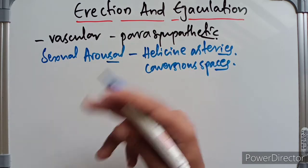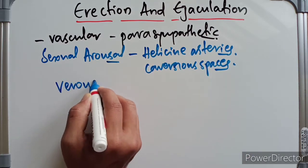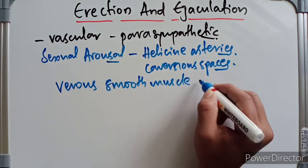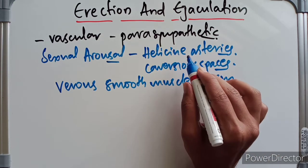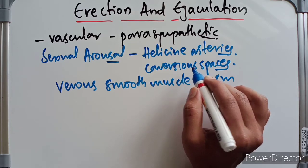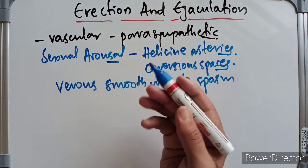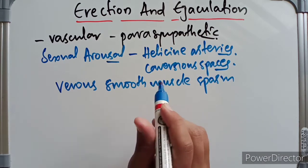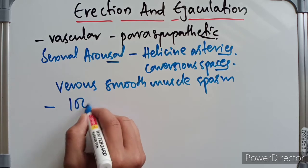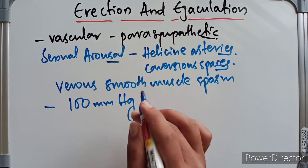This is associated with simultaneous spasm of the venous smooth muscle, so venous occlusion takes place. As the venous outflow is occluded, blood pressure in the cavernous spaces causes inflation and rigidity of the erectile tissue — this is called erection. The pressure within the penis during erection is close to 100 mmHg.